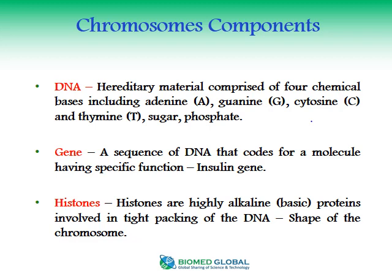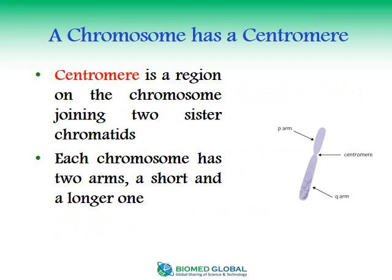A gene is a sequence of DNA that codes for a molecule having a specific function. The insulin gene is a good example — if this gene is defective, people suffer from diabetes. Histones are the proteins in the chromosomes; they are highly alkaline, basic in nature, and involved in the tight packing of DNA. The shape of the chromosome is largely due to these histone proteins.